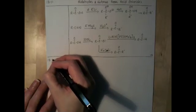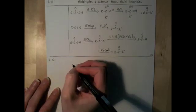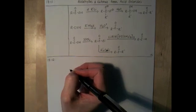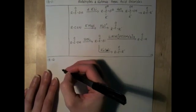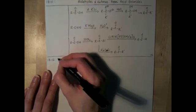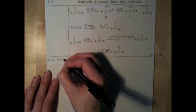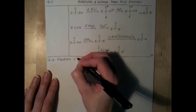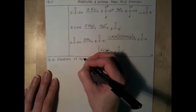Next section, 1812, we're going to start looking at reactions that aldehydes and ketones will do. Aldehydes and ketones as reactants instead of products. 1812 is called the reactions of ketones and aldehydes.